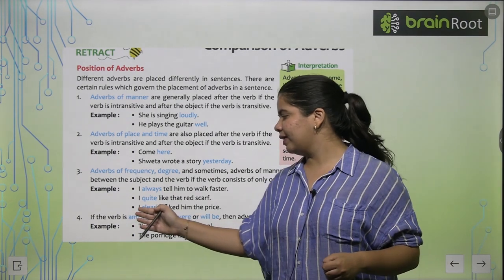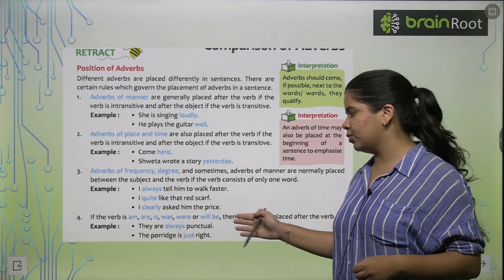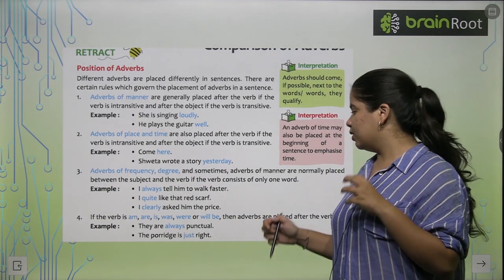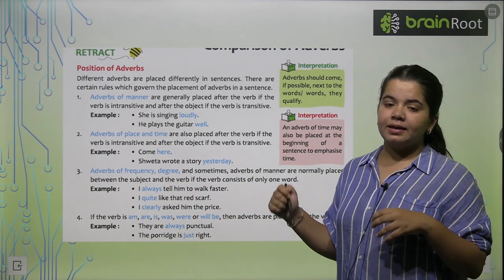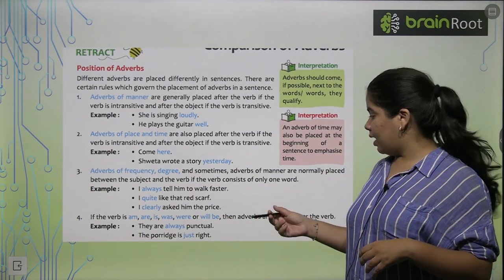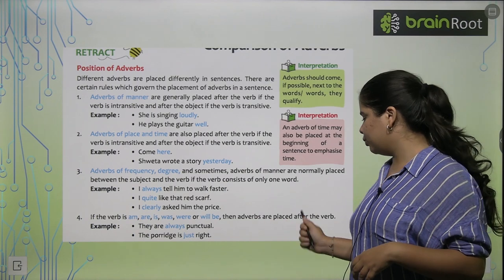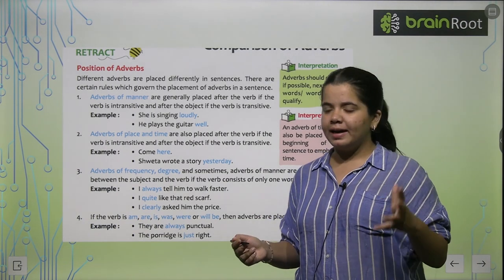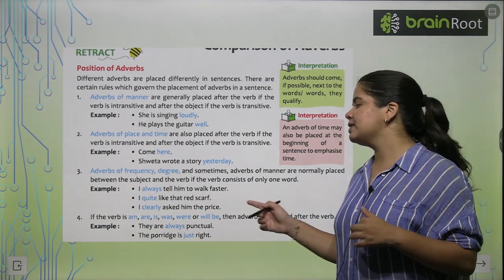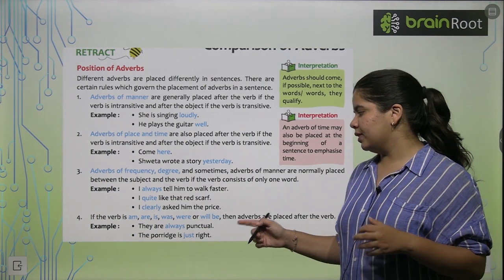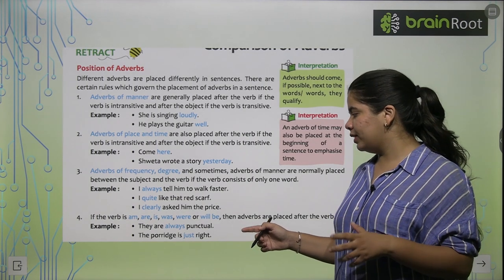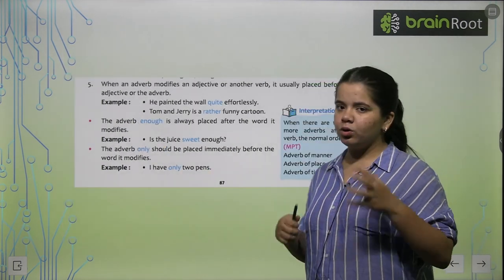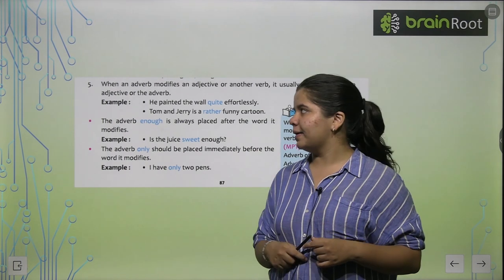We have these verbs: am, is, are, was, were, will be. What happens is that the adverb is placed after the verb. For example, 'they are always punctual' and 'the porridge is just right.' You have to place it in this way.